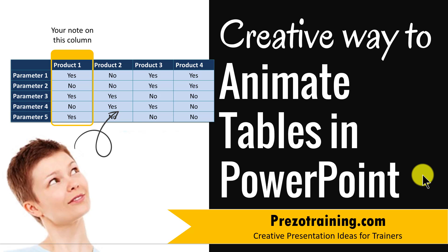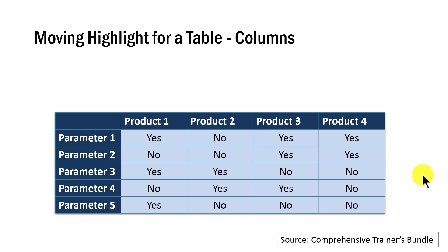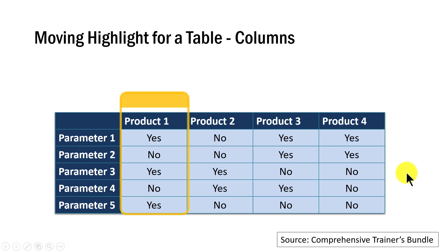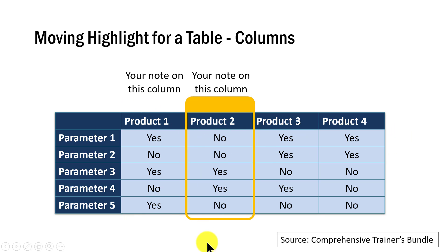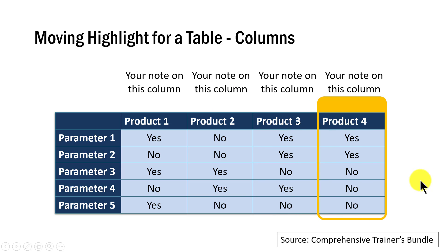The creative animation you will learn today looks like this. As you can see, it is a simple table, but we want to talk about one product at a time and provide some notes or reference points about the product. On a click, you can see that we lay emphasis on one product and then write a note about the column. On the next click, the emphasis moves to the next product with its associated note, and then to the third and then to the fourth. It's a very simple way to draw the viewer's attention to each of the products in succession.